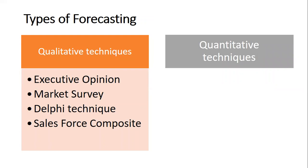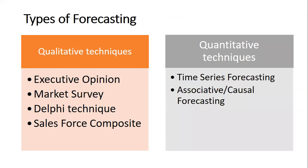Quantitative techniques, as discussed earlier, are based on mathematical models. There are two major types: time series forecasting and associative or causal forecasting. Time series models look at past patterns of data and attempt to predict the future based upon the underlying patterns contained within those data — for example, the percentage trend or growth method, moving average method, and so on. This method is preferred for long-term forecasting.